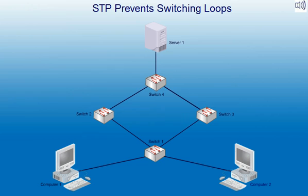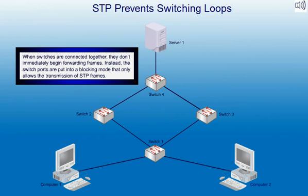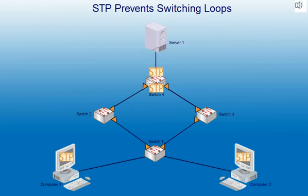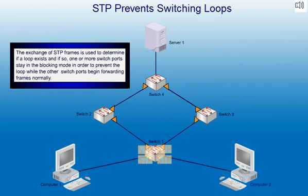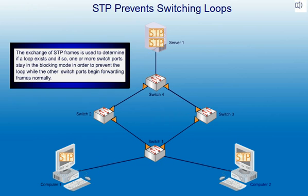Here's how it works. When switches are connected together, they don't immediately begin forwarding frames. Instead, the switch ports are put into a blocking mode that only allows the transmission of STP frames. The goal of STP is to create a loop-free topology. The exchange of STP frames is used to determine if a loop exists, and if so, one or more switch ports stay in the blocking mode in order to prevent the loop, while the other switch ports begin forwarding frames normally.